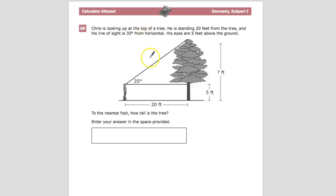I have no idea why. Maybe he just likes the top of trees. Maybe there's a squirrel up there. I don't know Chris's life. He's standing 20 feet from the tree and his line of sight is 35 degrees from horizontal. His eyes are 5 feet above the ground.